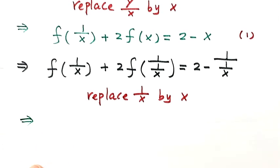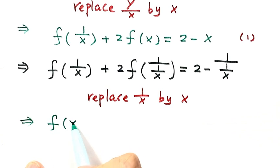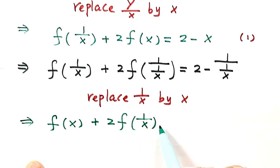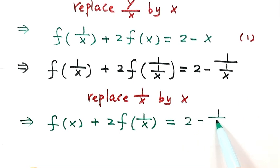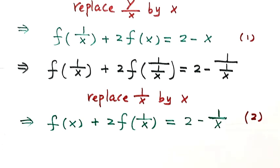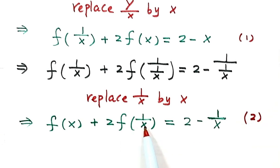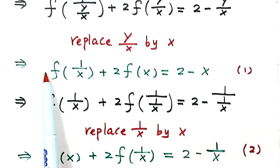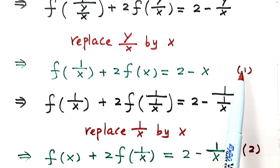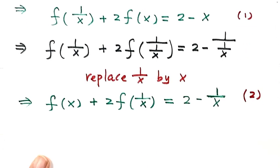So then we have: f of x plus 2 times f of 1 over x equals 2 minus 1 over x. So let's label this one as equation 2. Since we try to get rid of f of 1 over x — you see here this coefficient is 2, but in equation 1 the coefficient is 1. So now let's do: equation 1 times 2, then minus equation 2.